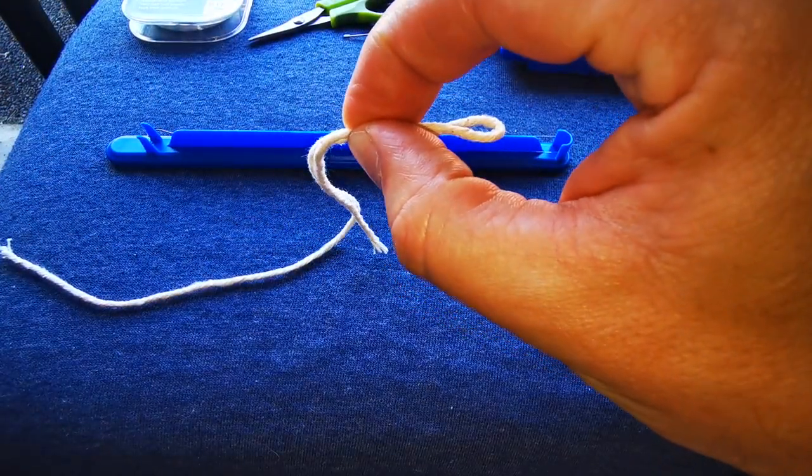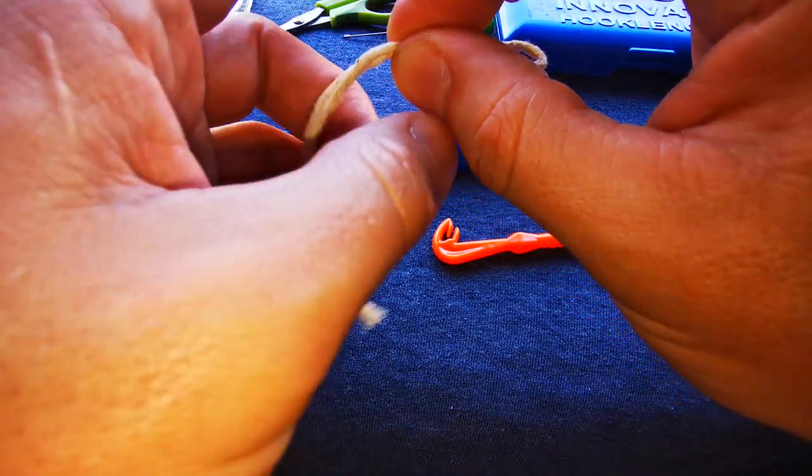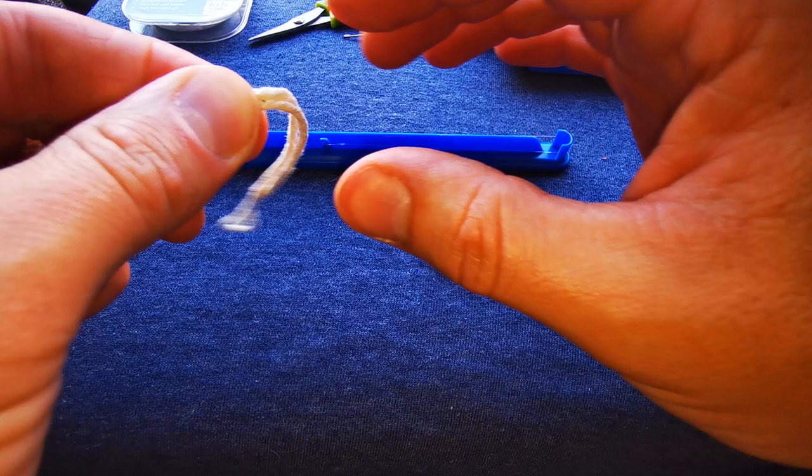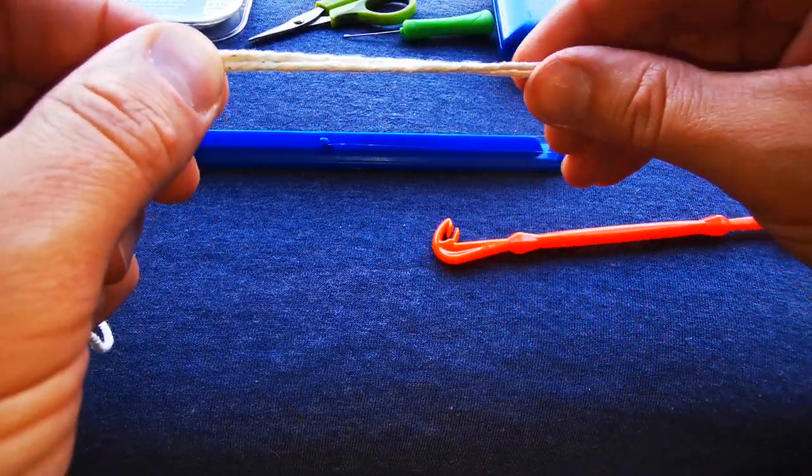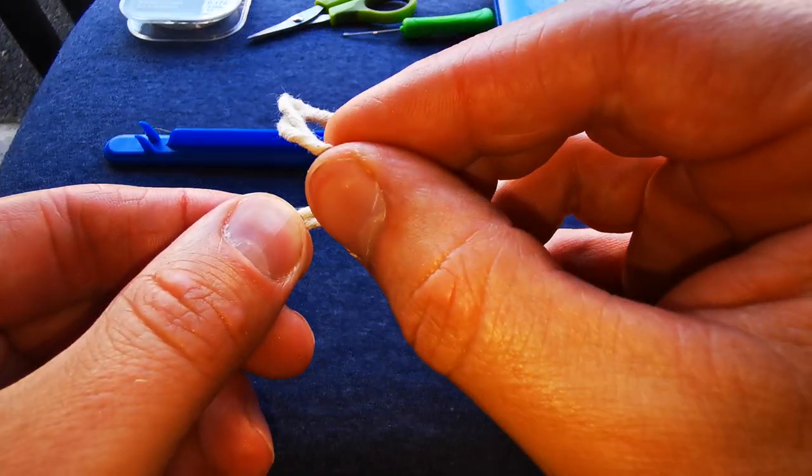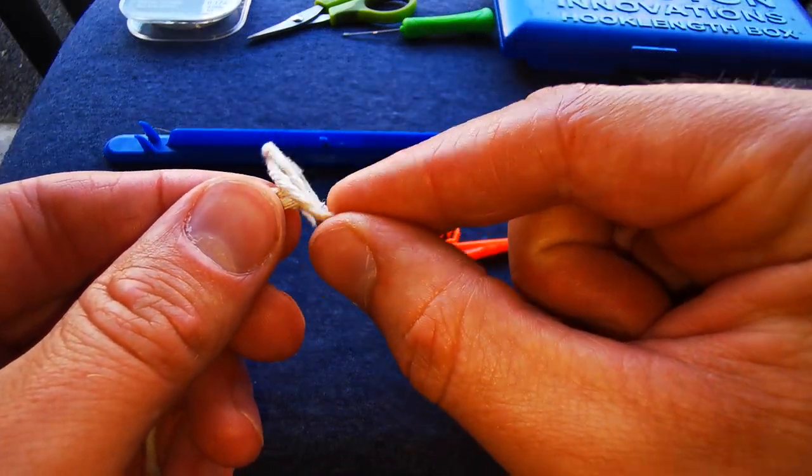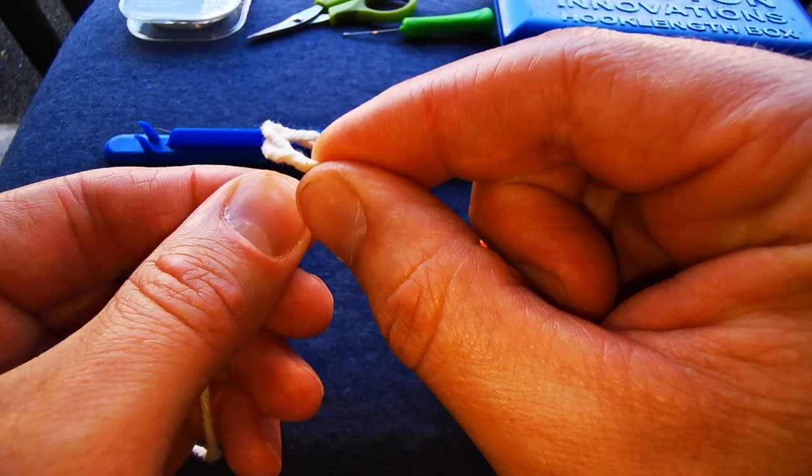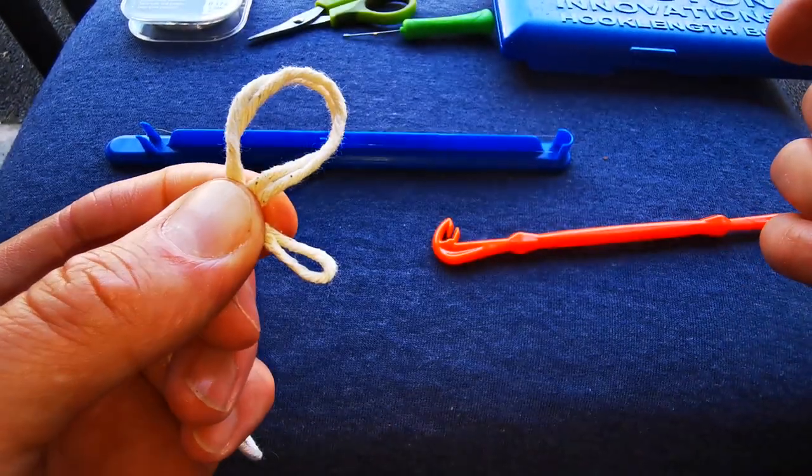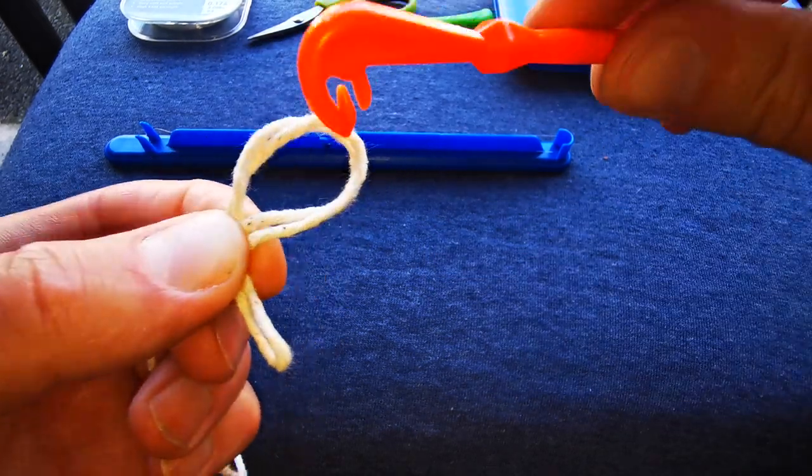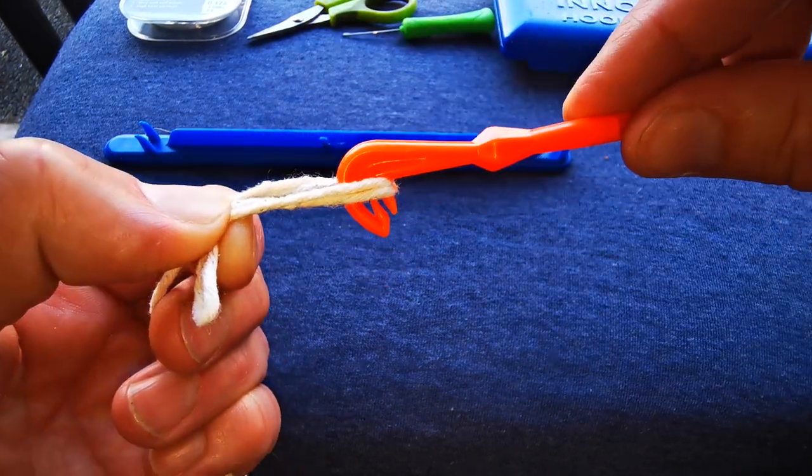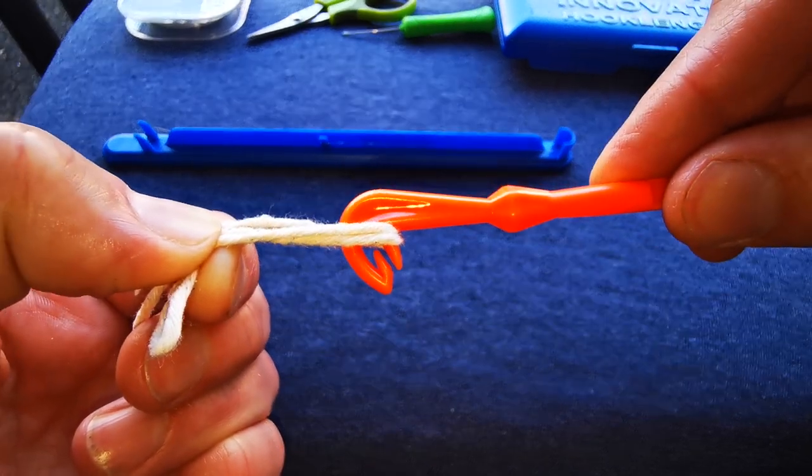Then you bring this hand back like that so you've got a good amount of loop. Then you're going over like that, so you're holding both over the top, and then you put your finger over like that. Then this one goes over there, so you can see now that both of them are at the back peg, over the back peg.